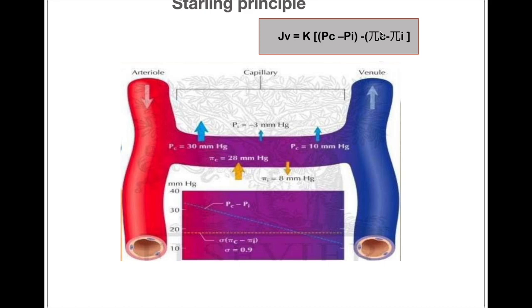The hydrostatic pressure is higher at the arterial end of a capillary and gradually decreases toward the venular end. As this hydrostatic pressure decreases along the capillary from the arterial to the venular end, filtration of plasma fluid into the interstitium occurs at the arterial end and reabsorption of interstitial fluid occurs at the venular end. This is the basis of the traditional Starling Principle, postulated in 1896.